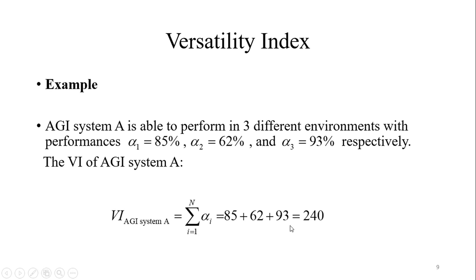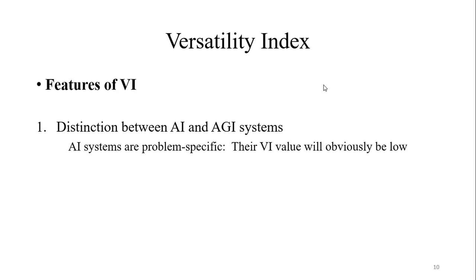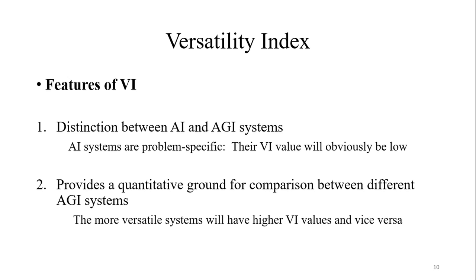The definition of VI has some features. Number one, VI can be used as a distinction between AI and AGI systems. Since AI systems are problem-specific, their VI value will obviously be low. Number two, VI provides a quantitative ground for comparison between different AGI systems. The more versatile systems will have higher VI values and vice versa.